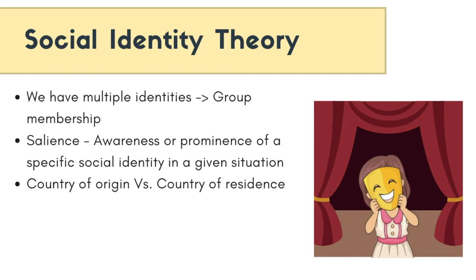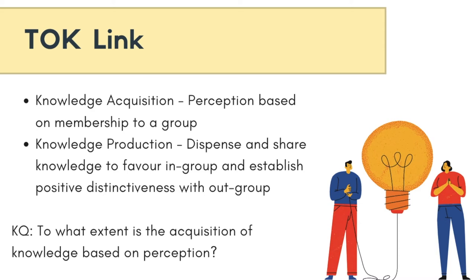The social identity theory has high relevance to knowledge acquisition and even knowledge production, and making links between your subjects and Theory of Knowledge is a very important part of IB. An example of a knowledge question could be: to what extent is the acquisition of knowledge based on perception? While discussing perception, one could argue that perception can be dependent on our salient identity and may even be biased in that we focus on information in the environment that confirms our beliefs relating to that salient identity, and ignore, reject, or even defend against beliefs that don't match those of that salient group.